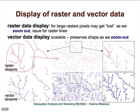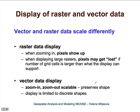However, if these data are converted to vector representation, when we zoom out to the full size of the vector data, the continuity in the streams is still preserved. To conclude, we can see that vector and raster data scale differently. With raster display, when we zoom in the pixels show up at a certain resolution, and when we display a large raster, some pixels may get lost and we can lose the structure of the feature — but they are still represented in the dataset; we just don't see them.